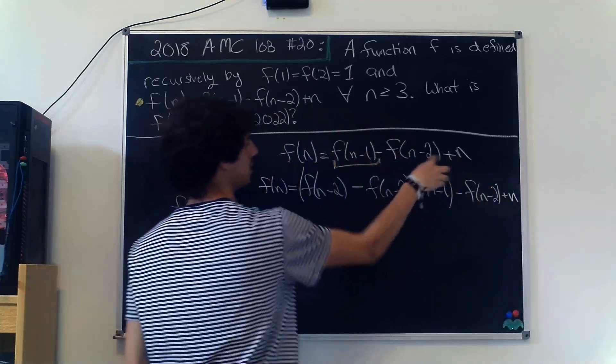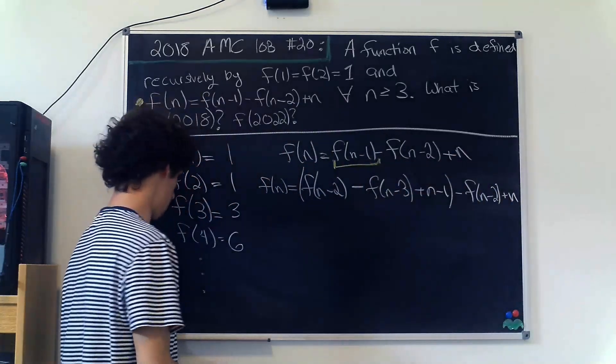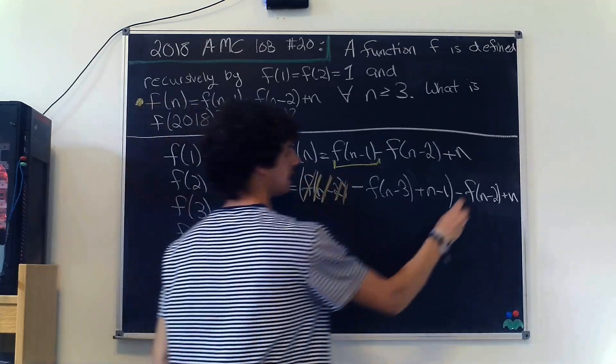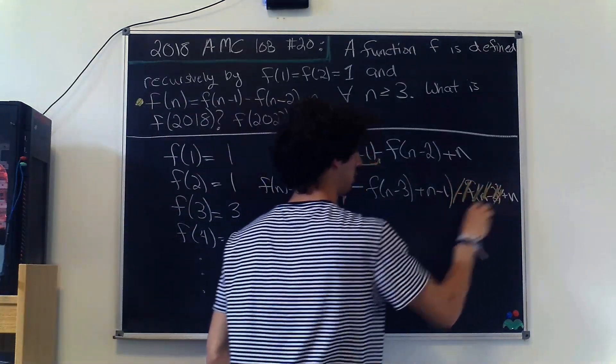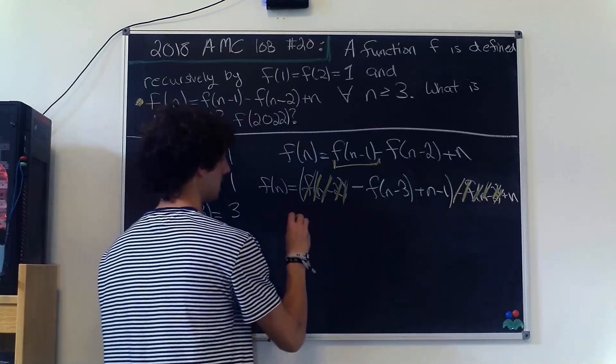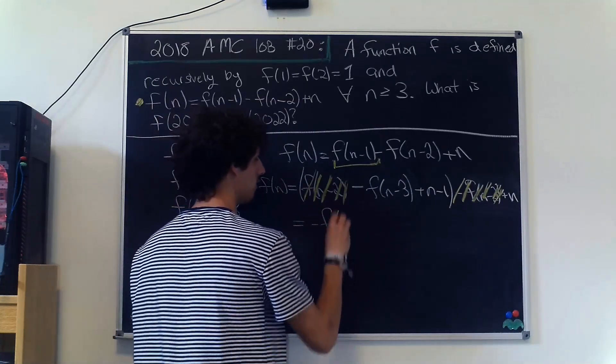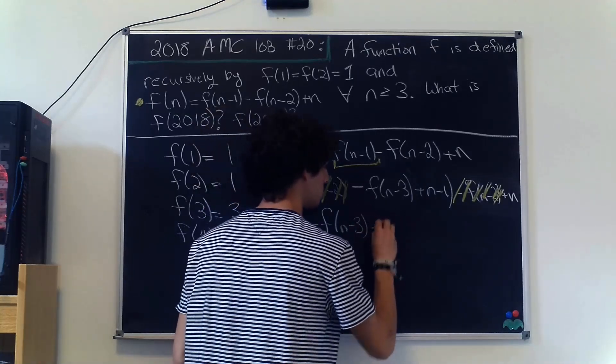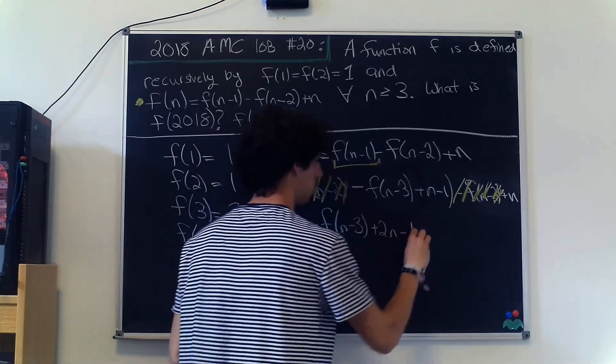But look, this f(n-2) cancels with this negative f(n-2) over here, and we are just left with negative f(n-3) plus 2n minus 1.